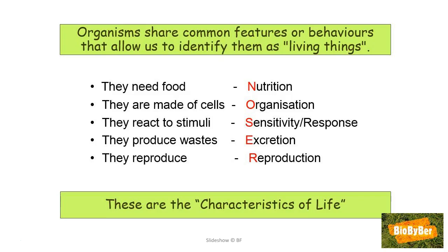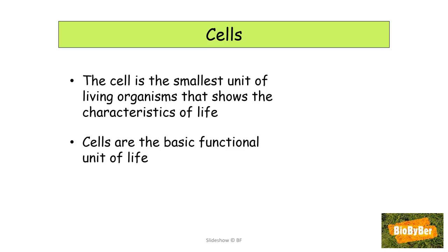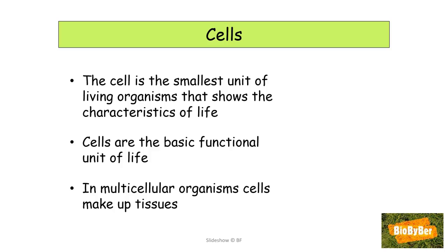In other words, NOSER: Nutrition, Organization, Sensitivity, Excretion, and Reproduction. So a cell is the smallest unit of a living organism that shows all of those characteristics. A cell is the basic functional unit of life. In multicellular organisms, cells make up tissues, which links to the characteristic of organization.